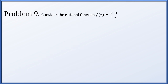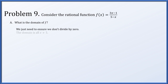The last problem. Consider the rational function f(x) = (3x - 1) / (5 - x). What's the domain? This is a rational function, so the only restriction is the denominator cannot be zero: 5 - x ≠ 0, meaning x ≠ 5. The domain is all real numbers except 5.